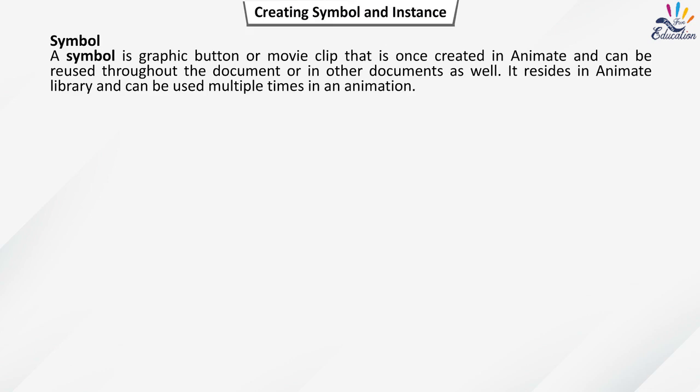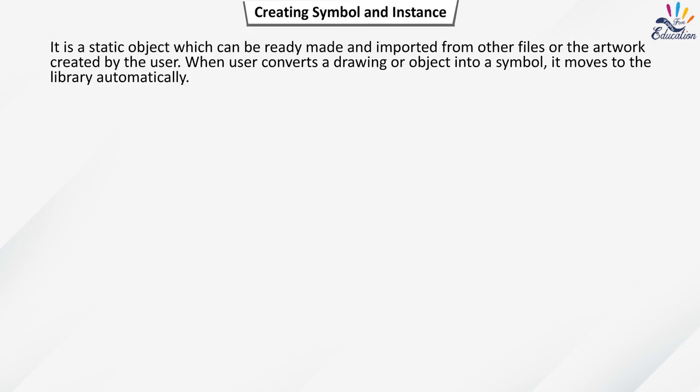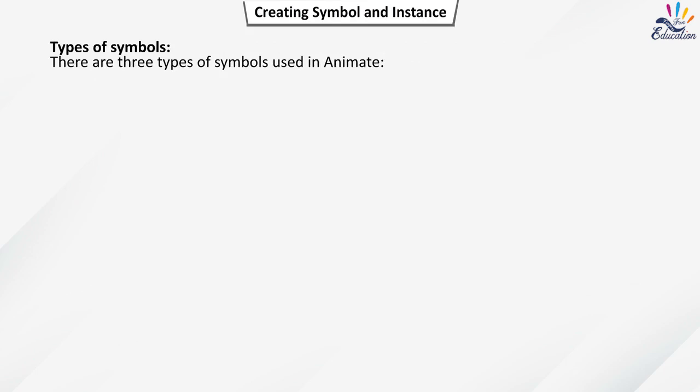A symbol is a graphic, button, or movie clip that is created once in Animate and can be reused throughout the document or in other documents. It resides in the Animate library and can be used multiple times in an animation. It is a static object which can be ready-made, imported from other files, or created by the user. When a user converts a drawing or object into a symbol, it moves to the library automatically.